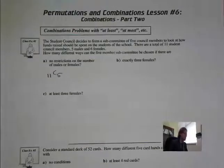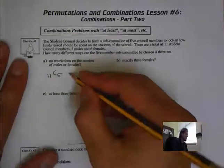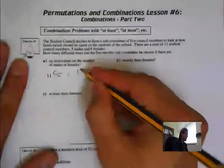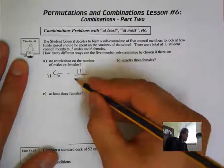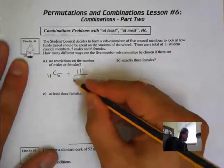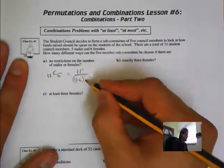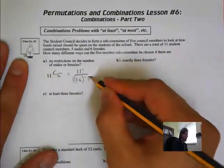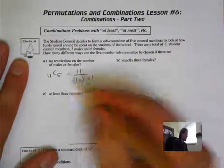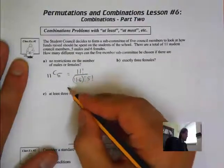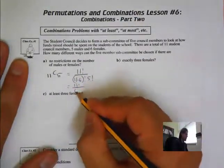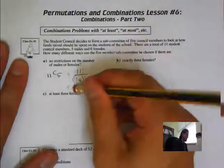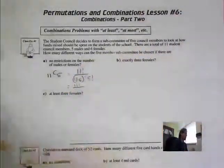What does that look like using a formula? That's 11 factorial all over (11 minus 5) factorial times 5 factorial — or 11 factorial all over 5 factorial times 6 factorial.